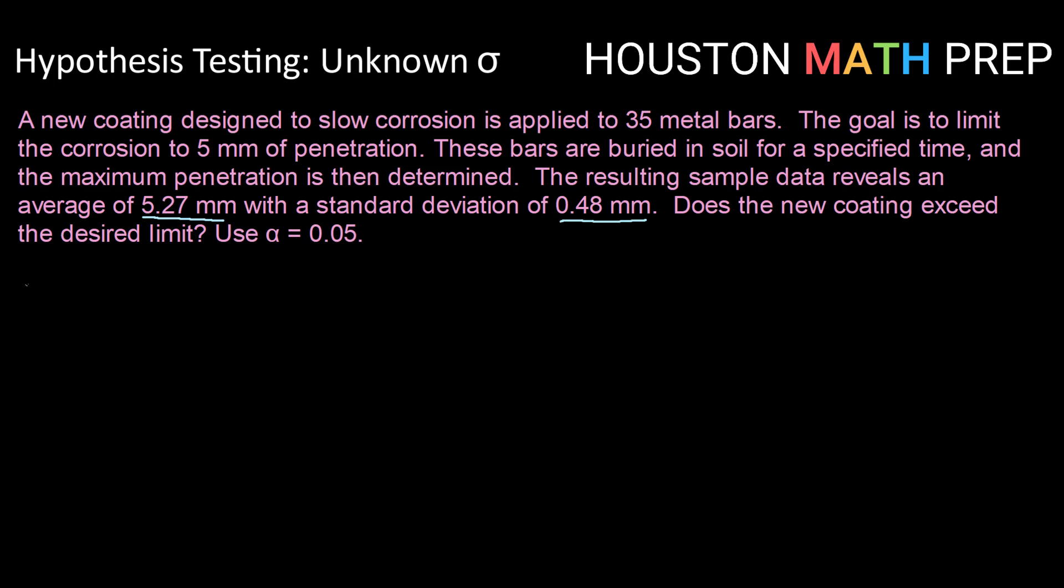All right, so we've always got to start by setting up a pair of hypothesis statements. So first of all our statement of equality. We're trying to limit to 5 millimeters of penetration. So we will set the null hypothesis that mu is equal to 5.